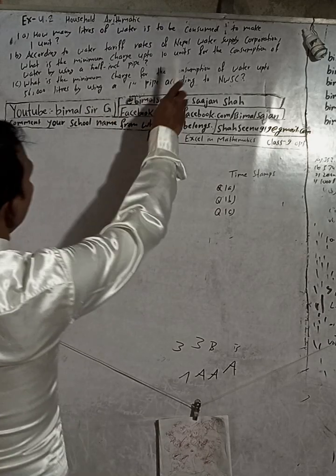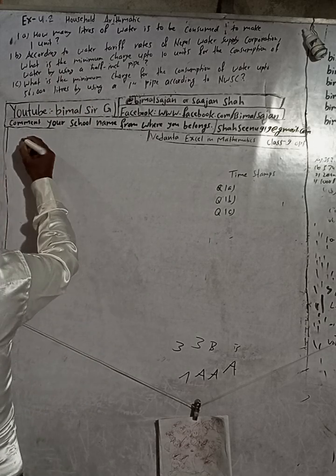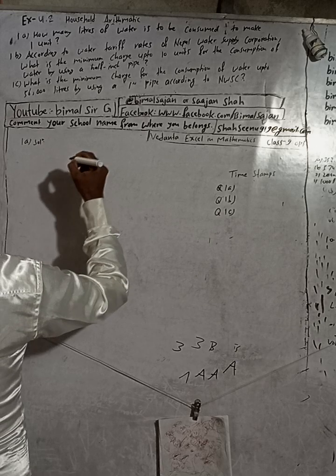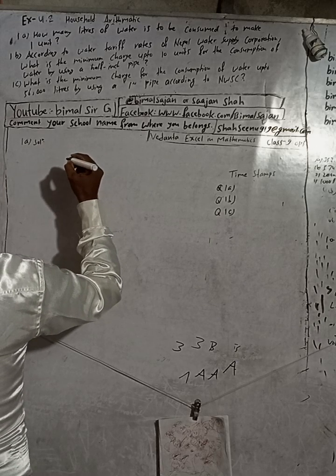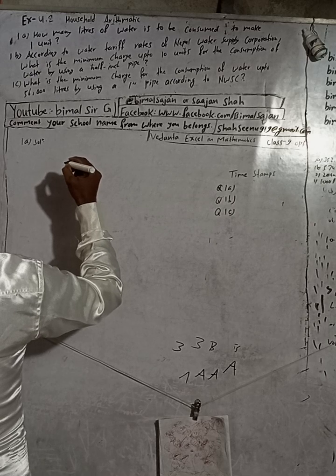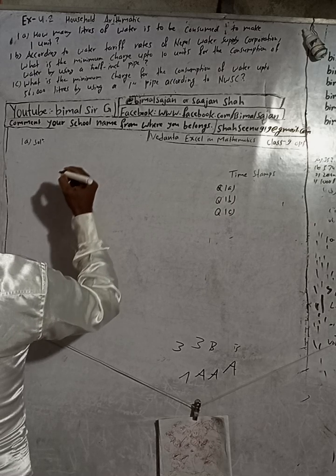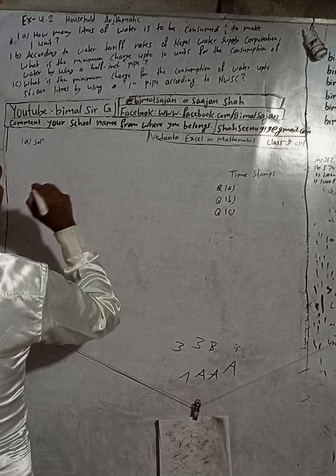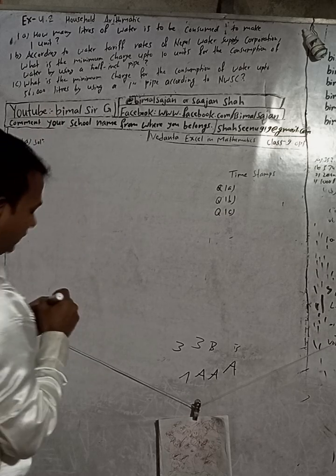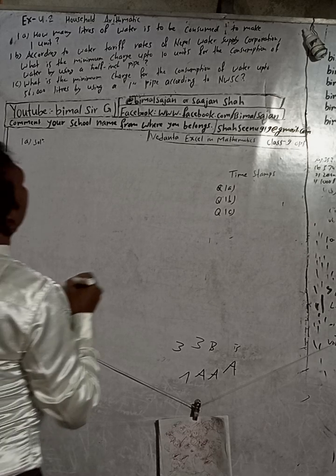The question is: how many liters of water is to be consumed to make one unit? This is question 1a. The answer is directly available — for one unit, one thousand liters is the answer. You can write it directly: how many liters of water...